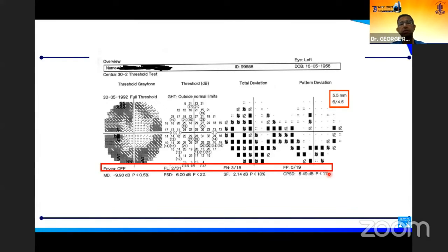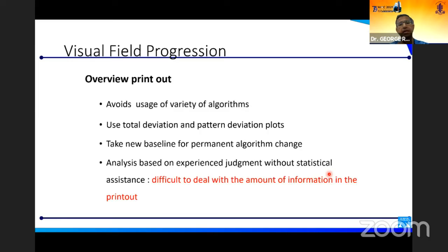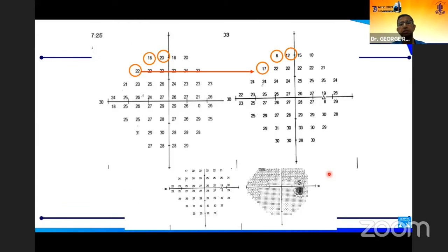So you can look at reliability, the mean deviation, VFI, whatever you want, and compare it further down along with the pattern. But the challenge with this technique is that while it awards a variety of algorithms, it is difficult for us to deal with the amount of information in the printout. Suppose you start looking at the actual threshold values on the printout. You can see that at these three points, the threshold values are actually reduced.